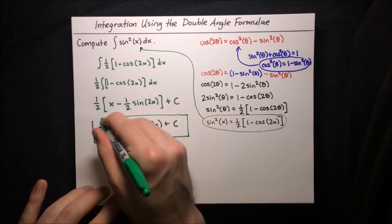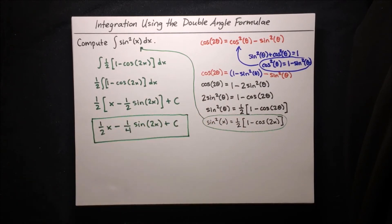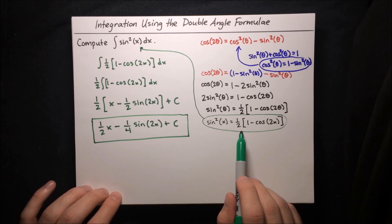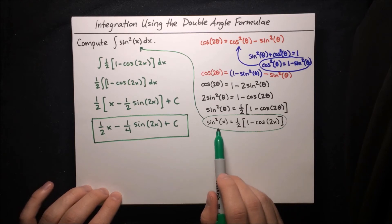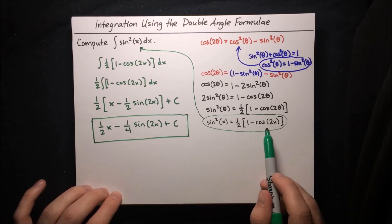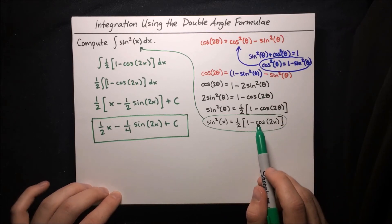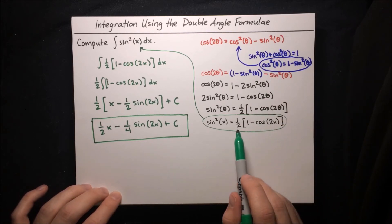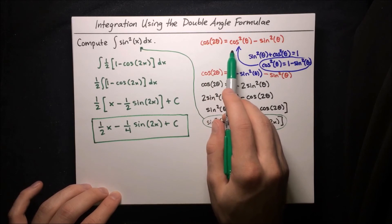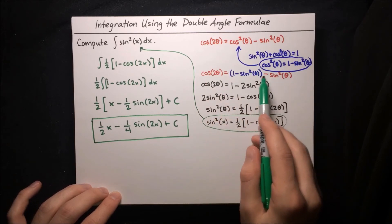Simplifying by multiplying through by one half: one half x minus one fourth sine of 2x plus our constant of integration. This formula we used is called the power reduction formula for sine: sine squared θ equals one half times (1 minus cosine of 2θ). It's helpful to remember it to speed up computations, but if you ever forget it, you can start with the double angle formula for cosine and use the Pythagorean identity.